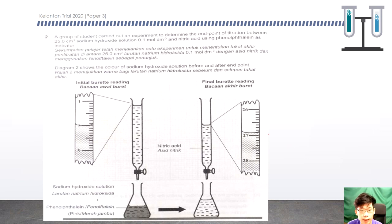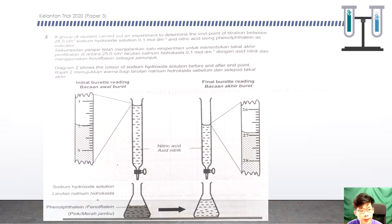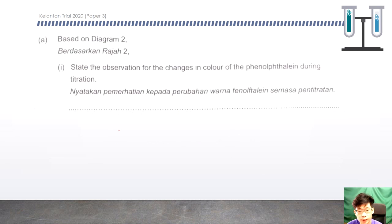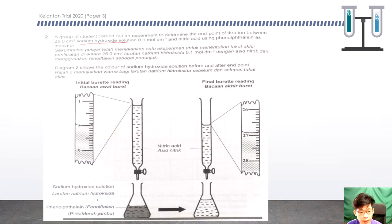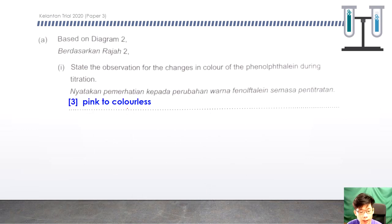Question 2. A group of students carry out an experiment to determine the end point of titration between 25 cubic centimetres of sodium hydroxide solution at 0.1 mol per cubic decimetre and nitric acid, using phenolphthalein as the indicator. You can see the initial and final burette readings to track the change of phenolphthalein from pink to colourless. For the observation: score 3 requires stating 'pink to colourless'; score 2, mention only 'colourless'; score 1, mention only 'colour change'.